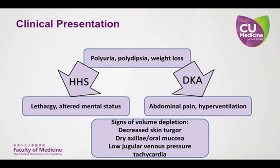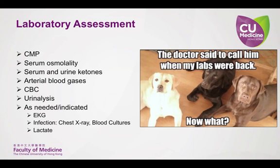Abdominal pain is far more common in DKA, with over 45% of patients having it as a complaint, as opposed to less than 15% of HHS patients. This is one of our biggest distinguishing factors before we have any lab results back in the A&E. Many labs are ordered to monitor HHS, with the common ones listed here and additional labs based on the potential precipitating cause.